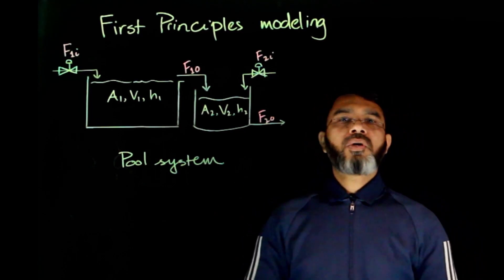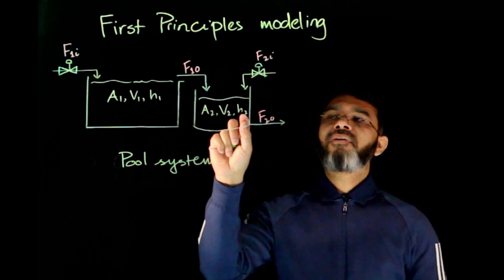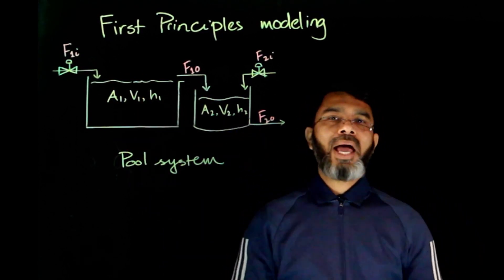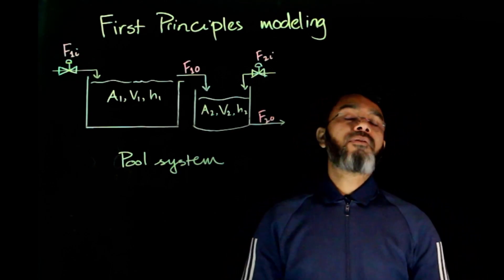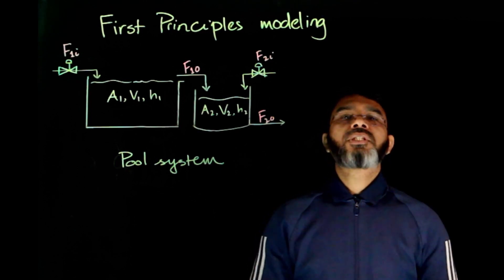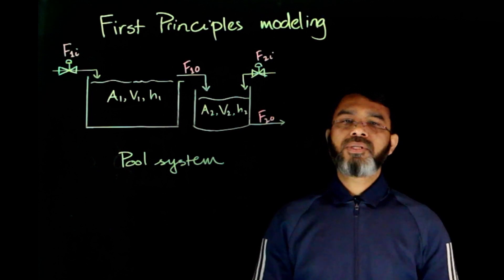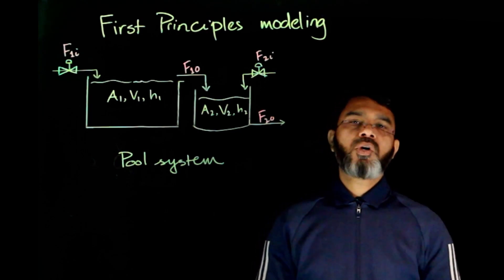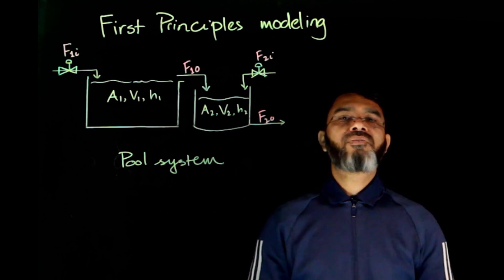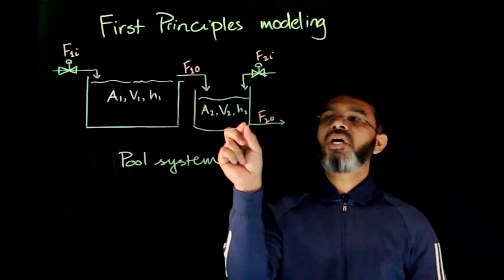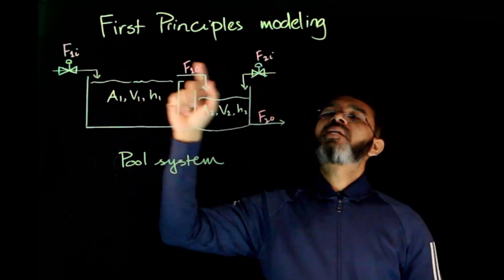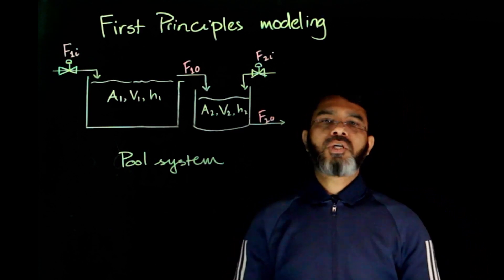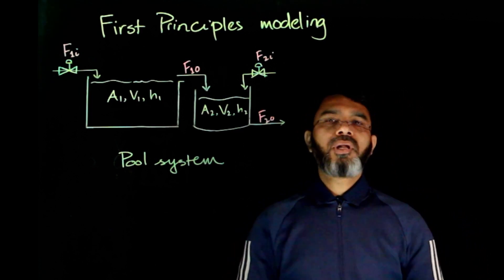From a control perspective, H2 is the output and F1I can be considered a disturbance. We have another inlet flow F2I which we can manipulate to maintain the level in pool two — that's the control problem. We need to find the model between the level and the input, and also how to link the input with the disturbance and whether the disturbance affects the output. First principles modeling is about converting process knowledge into mathematical equations.